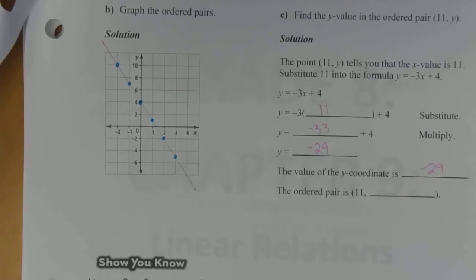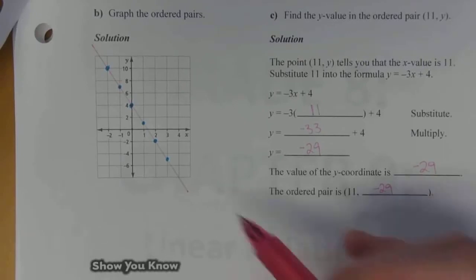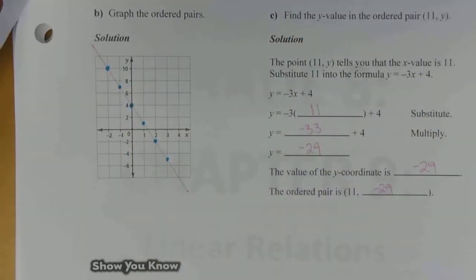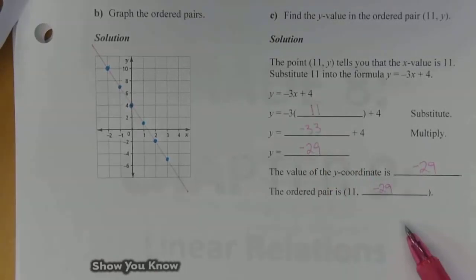And therefore, the ordered pair is 11 comma negative 29. So yes, you could theoretically figure it out based on the graph. But you've got an equation here that you can use. So that's going to give you more precision. And probably going to be faster than trying to make the graph big enough and then find the exact point.